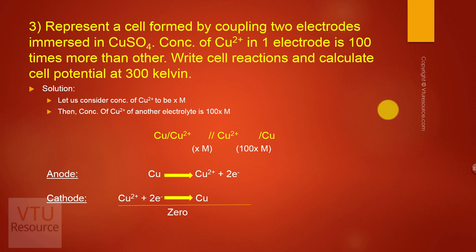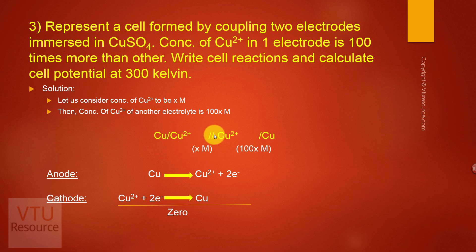Next problem: represent a cell formed by coupling two electrodes immersed in copper sulfate where the concentration of Cu²⁺ in one electrode is 100 times more than the other. Write cell reactions and calculate cell potential at 300 K. Let the concentration of Cu²⁺ be x molar; then the other is 100x molar. The cell is represented as: Cu | Cu²⁺ (x M) || Cu²⁺ (100x M) | Cu.